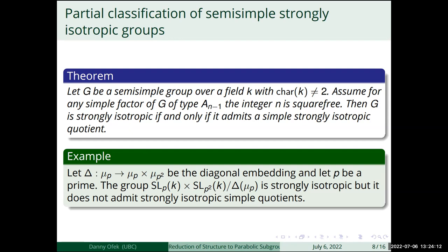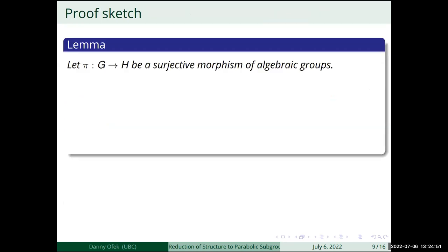The restriction on the root system comes from the period-index problem for groups of type A, where central simple algebras come in and the period-index problem complicates things. In the preprint there is also a combinatorial criterion for when a split semi-simple group of type A is strongly isotropic, but that criterion gets complicated very quickly as the number of factors grows.